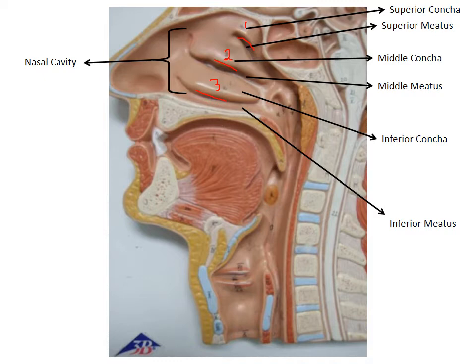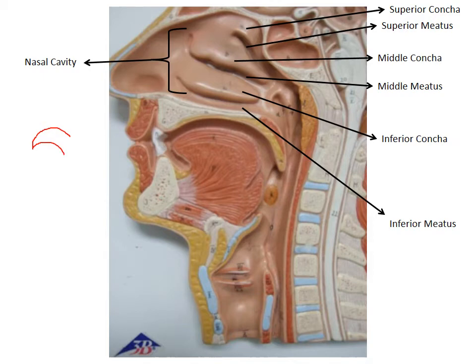The three conchae are called the superior concha, the middle concha, and the inferior concha. The superior concha is the one you can't see on the skeleton. These are the little ridges I described as little waves that have been frozen. They form a little area like a tube underneath them, and that tube is called a meatus.